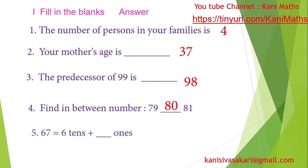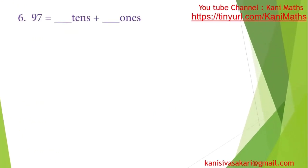67, 6 tens 7 ones. Next, 97, 9 tens 7 ones. What is smaller than 67? 67 smaller number, 67 before number. Smaller number, so 57.